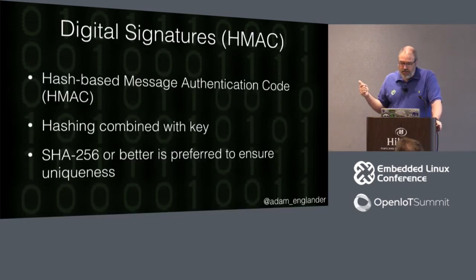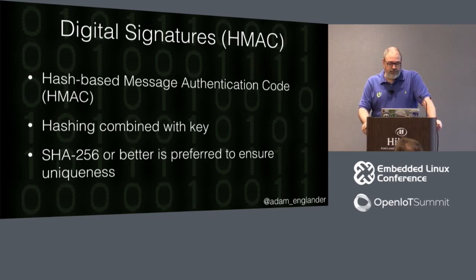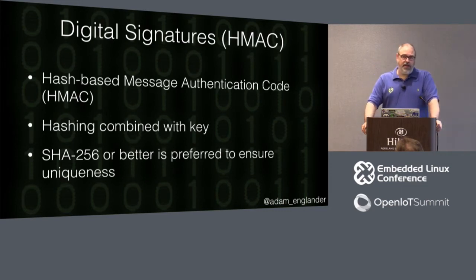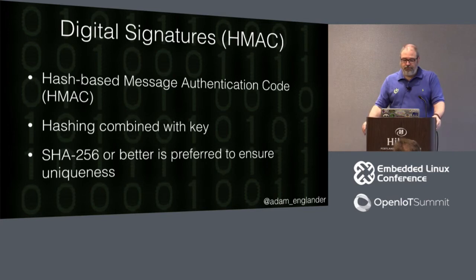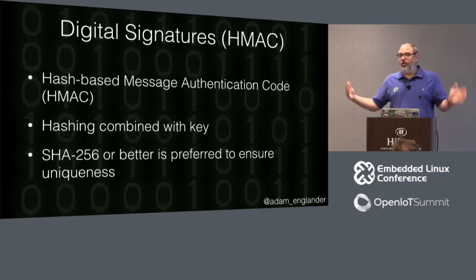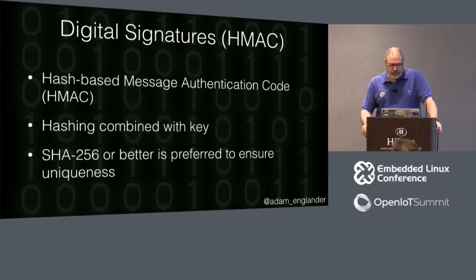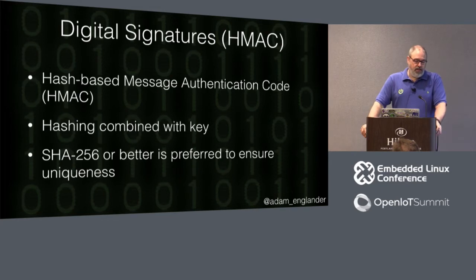Which brings us to digital signatures — the last thing in symmetric key cryptography. An HMAC — Hash-Based Message Authentication Code — you've probably used or seen HMAC before. It's hashing combined with a key. Using SHA-256 or better, you provide a key, it does math against those two and hashes that value. If you don't have the key, you cannot recreate the hash — that's why it's symmetric: both sides have to know what the key is so you can verify the data coming across. It is very quick and fairly secure as long as you're using SHA-256 or better.